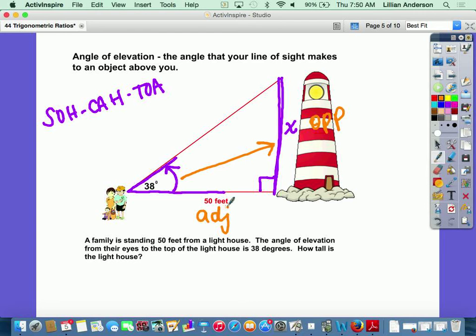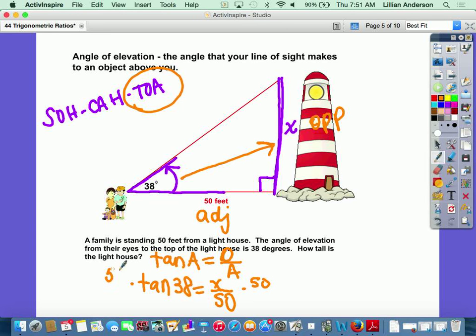So which trig ratio has opposite and adjacent in it? If you guess tangent, then you're right. So you set it up: the tangent of your angle equals our opposite side over our adjacent side. Well our angle is 38 degrees, so I'm going to plug that in. Our opposite side was x, our adjacent side was 50.